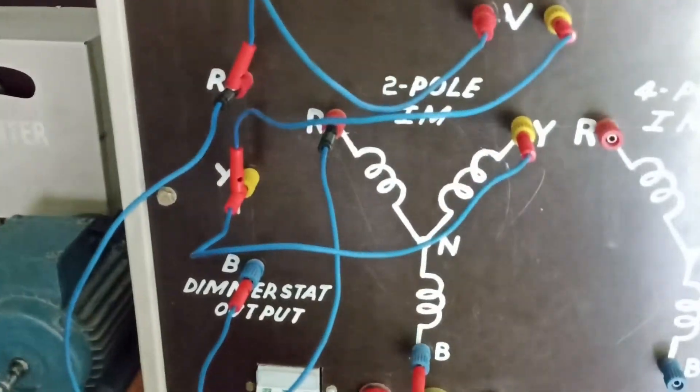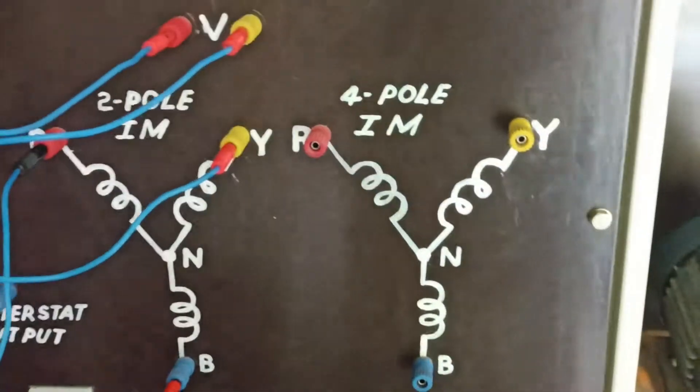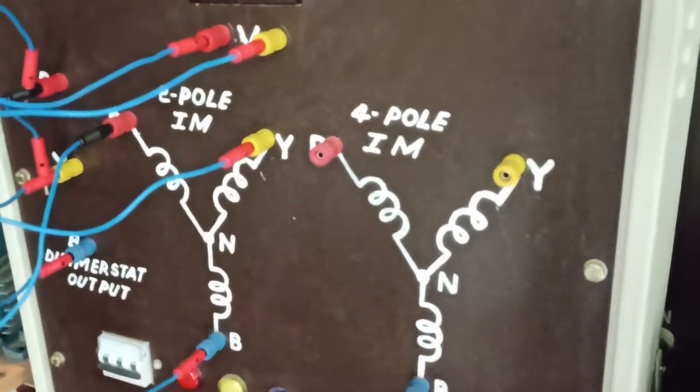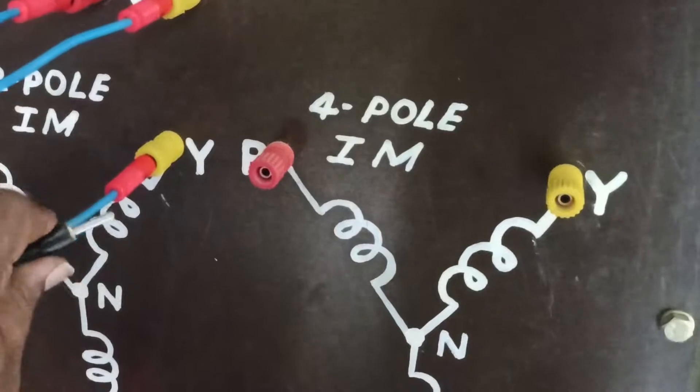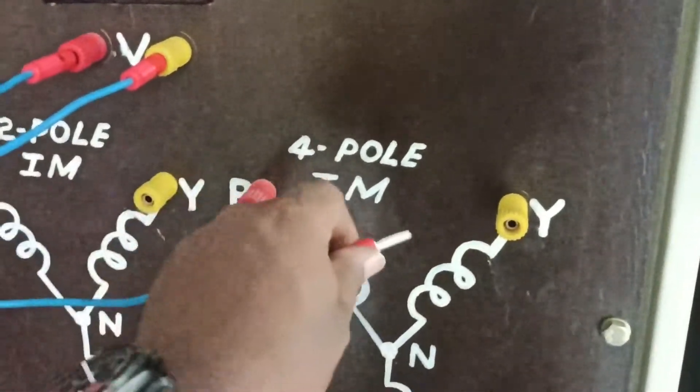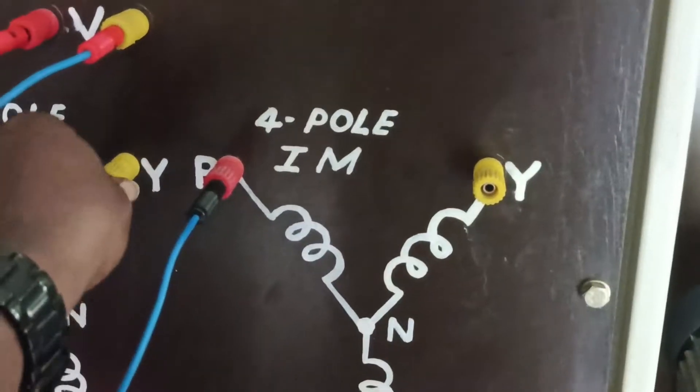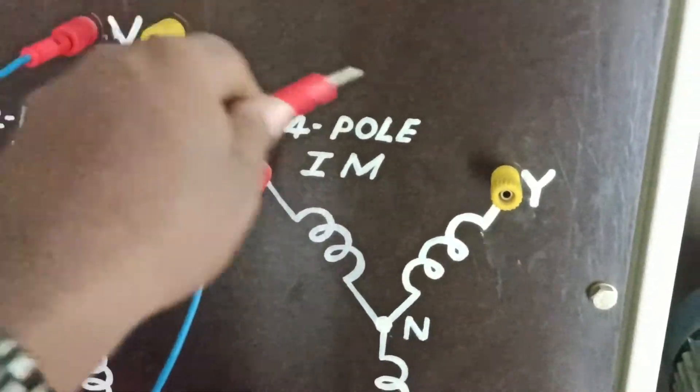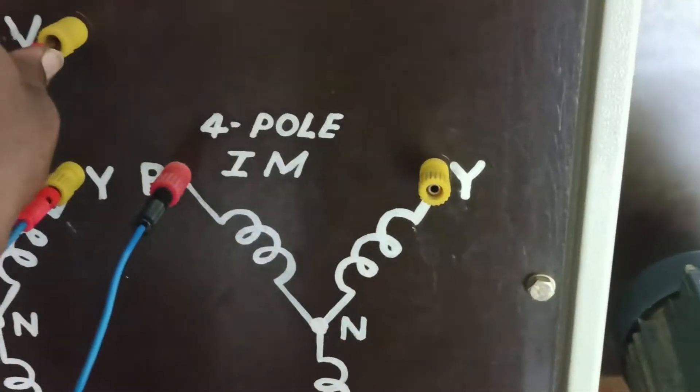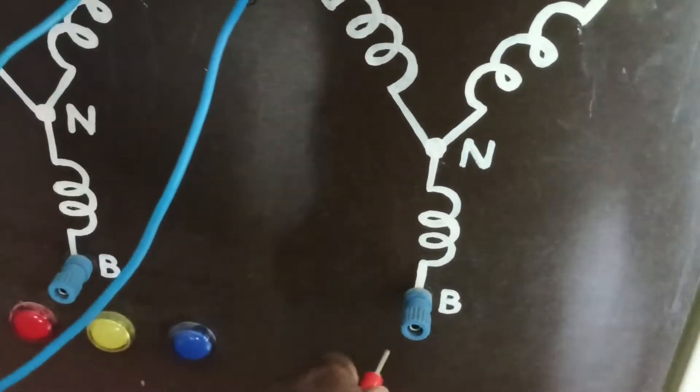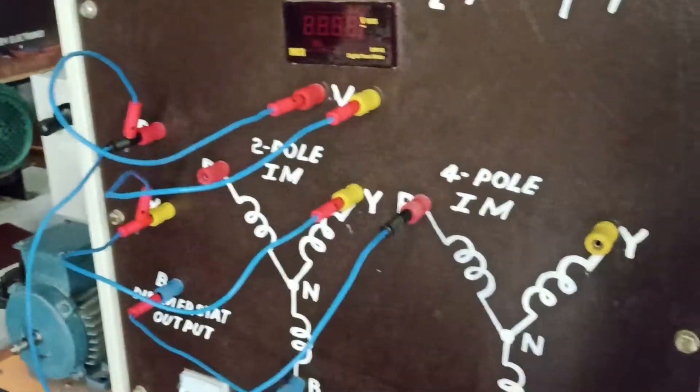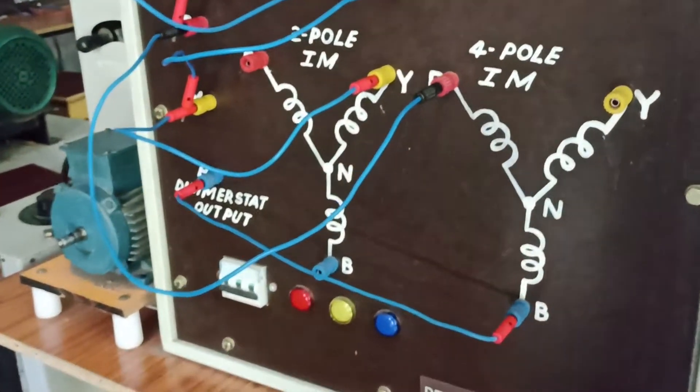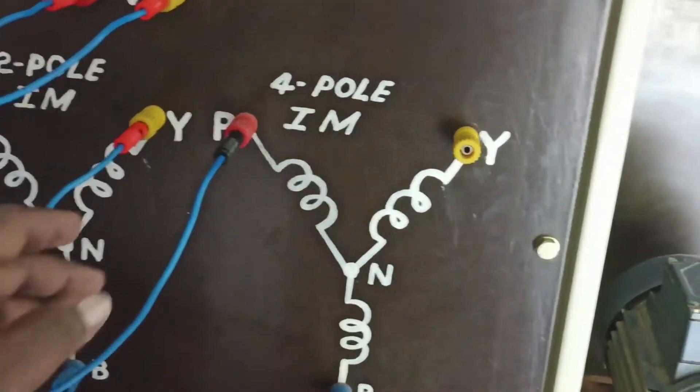The same procedure will be adopted for the four-pole motor also. I will be providing R to R, Y to Y, and B to B connections. You need to take long cables and connect R to R, Y to Y, B to B. This way you can easily provide the connections.